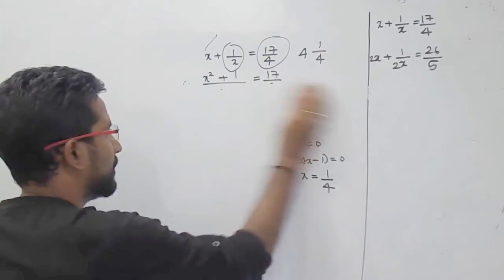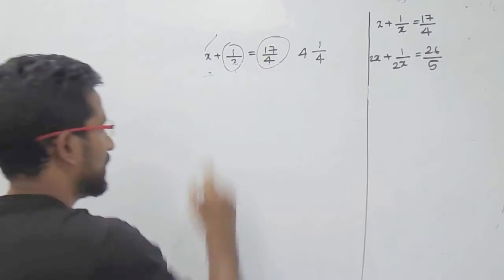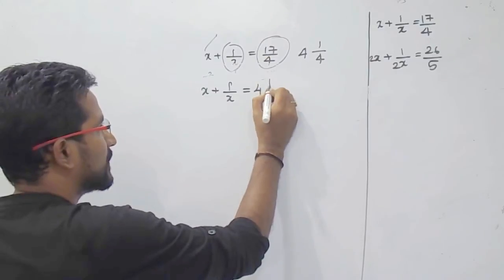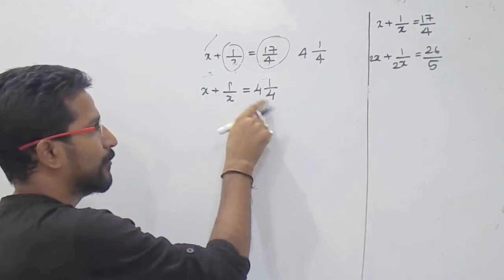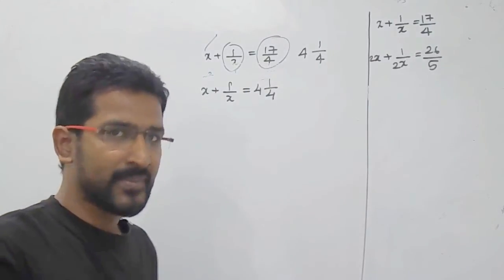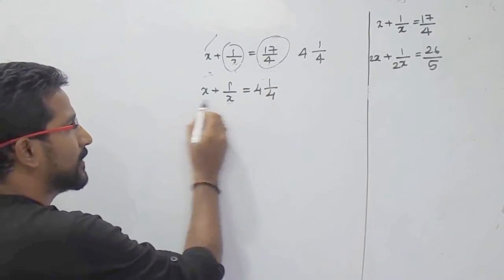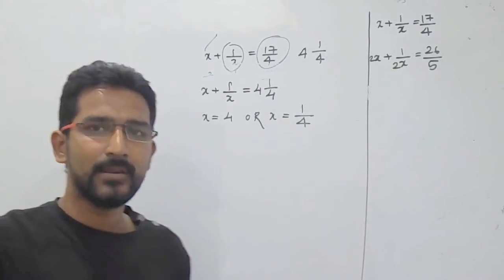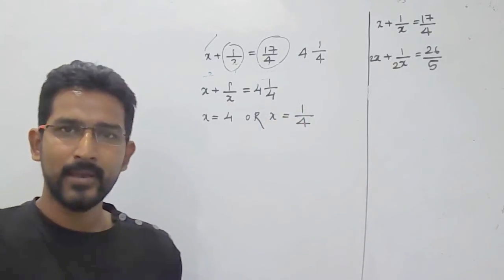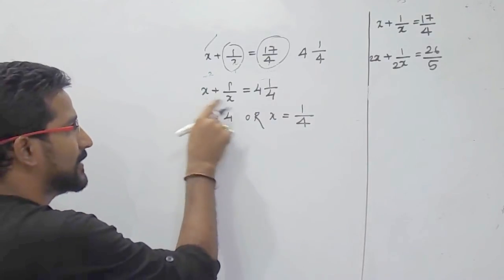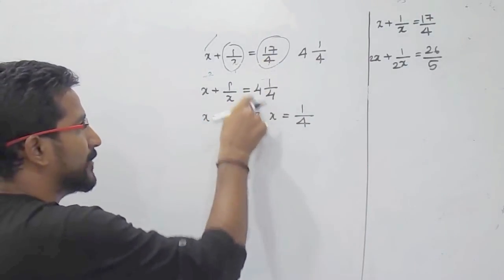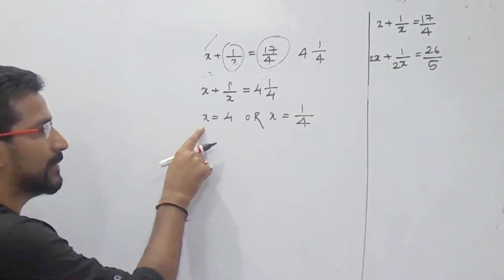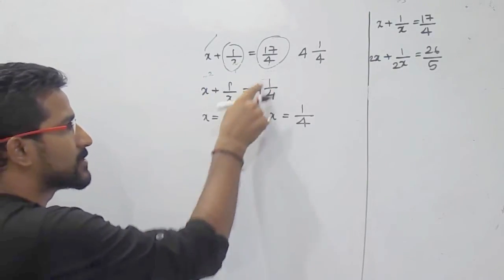Now by using the trick: x plus 1 upon x equals 17 by 4. We write 17 by 4 as 4 and 1 by 4 in mixed fraction form — since 4 into 4 is 16, plus 1 is 17. Then just equate: x equals 4 or x equals 1 by 4. The condition is they should be in reciprocal form, and the right-hand side number written as a mixed fraction should also have reciprocal parts — 4 and 1 by 4 are reciprocal of each other. So directly x equals 4 or x equals 1 by 4.